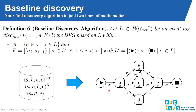If you look at this data set, the directly follows relationship we create has 16 traces, so from the start node there is an arc with frequency 16 — everything starts with A. We always end with E, so we also see the number 16 there. The connection between A and B happens 10 times, while the connection between A and D happens only once. Note that in this example every activity happens only once per execution, but if there are loops, multiple occurrences are possible.